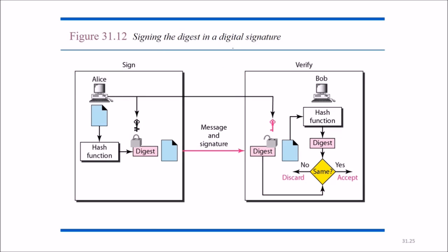Signing the digest in a digital signature works as follows: the message is passed through a hash function to produce a digest, which is then signed using Alice's private key, and sent along with the message. At the receiver's end, the signature is opened with Alice's public key. The received message is also passed through the hash function, and the two digests are compared. If they match, we accept the message; otherwise we discard it.